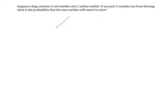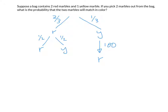The probability of drawing red first is two-thirds, and one-third for yellow. If you draw yellow first, it's 100% that you get red next. If you draw red first, it's 50/50 — one of each color remains. So getting two reds is two-thirds times one-half, which equals one-third. Getting red then yellow is also two-thirds times one-half, which is also one-third.